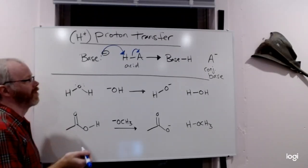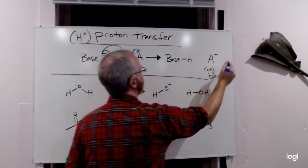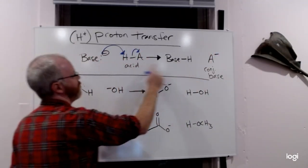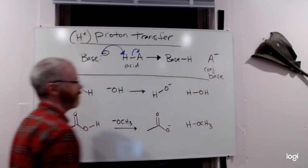If the electrons are going somewhere else, it's not proton transfer. That's where the A- comes from - this bond breaking - and the base is now attached to the hydrogen. So our acid has become our conjugate base.